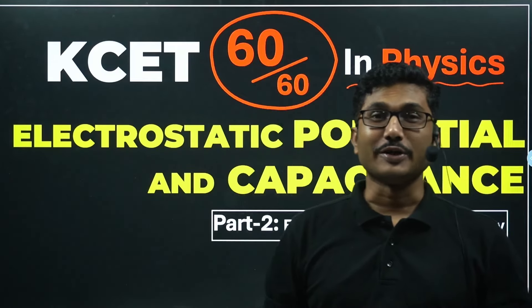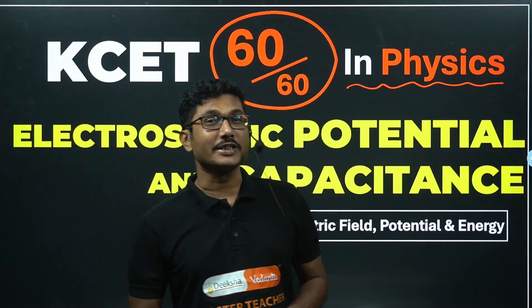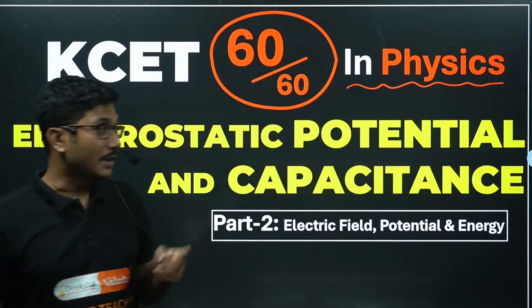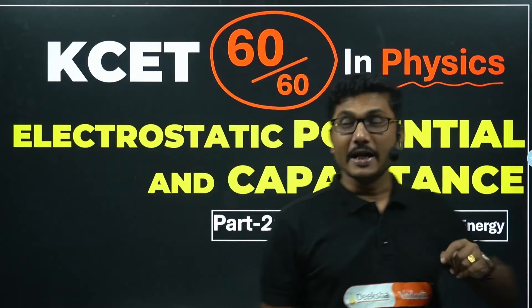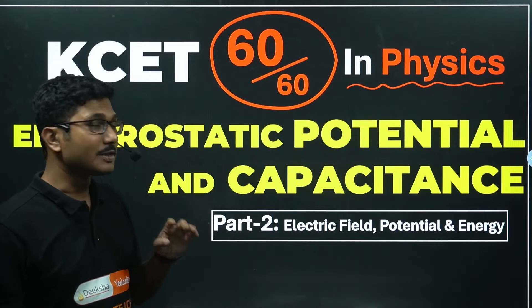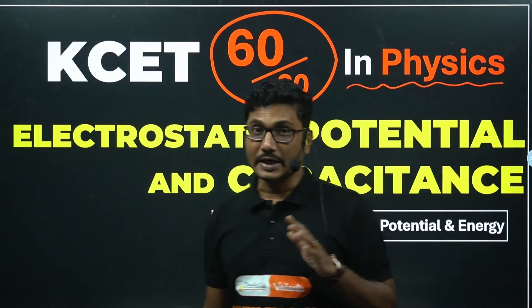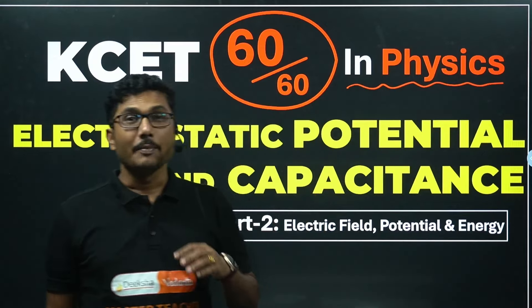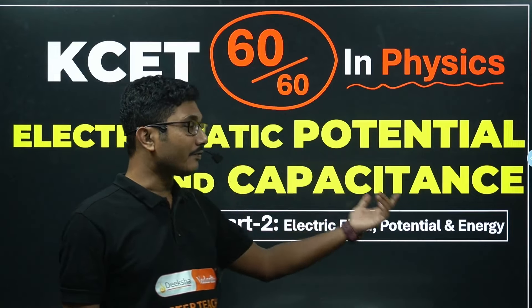Hello everyone and welcome back to Diksha Karnataka YouTube channel. You are currently watching KCET 60 out of 60 in physics series, where we are discussing each chapter concept-wise. Today we are going to discuss electrostatics and capacitance part 2. We have already discussed basics about electric potential, and today we will discuss the relationship between electric field and electric potential.